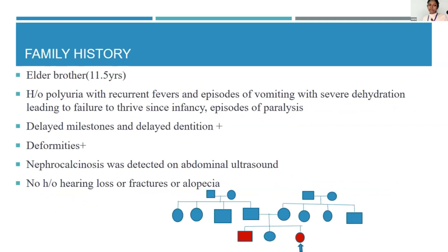In the family there was significant history, with the elder sibling affected with polyuria, recurrent fever, episodes of vomiting, dehydration, leading to failure to thrive since infancy, and also episodes of weakness. He also had delayed milestones, delayed dentition, and lower limb deformities. He was found on abdominal ultrasound to have bilateral nephrocalcinosis, but did not have any hearing loss, fractures, or alopecia.